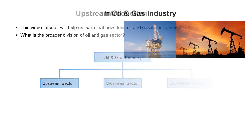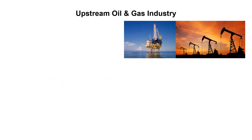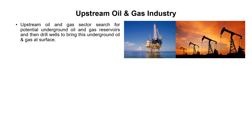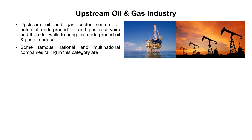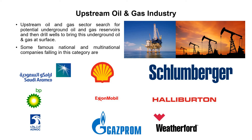The upstream oil and gas sector searches for potential underground oil and gas reservoirs and then drills wells to bring this underground oil and gas to the surface. Its main responsibility is to search for oil and gas underground and bring it to the surface. Some famous national and multinational companies in this category include Saudi Aramco and British Petroleum.